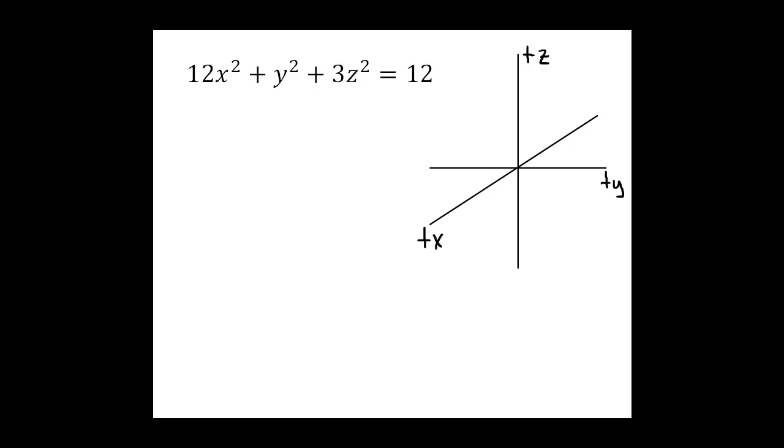We're going to graph this surface now in R3. We have 12x² + y² + 3z² = 12. So we're going to start with the trace in the yz plane since that's the surface of the paper. That's the easy one to do.